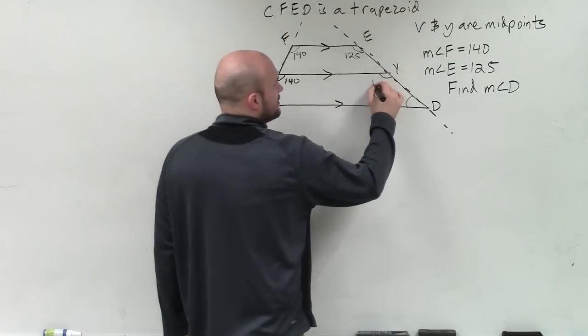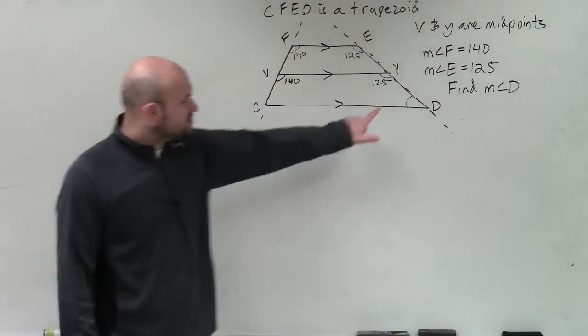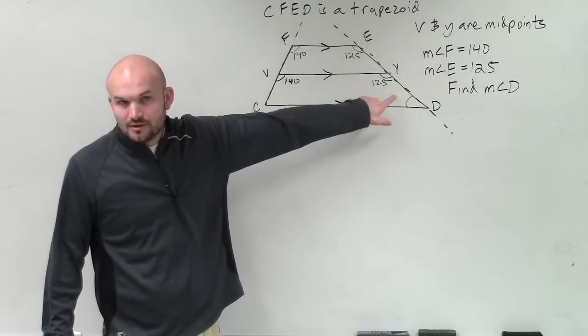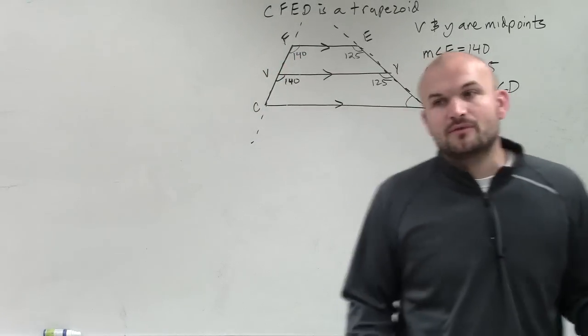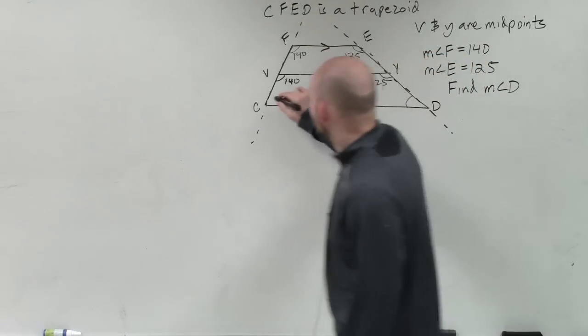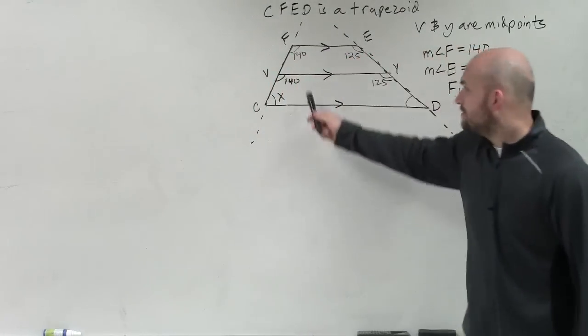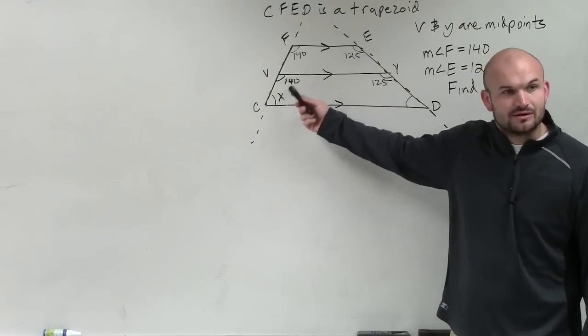Then I can also say that over here, that's 125, because those are corresponding as well. Now, remember, we're trying to figure out what this angle is. So the next thing I could look at, and there's a couple different ways to do this, is if this is 140, then I know that this angle, these two are what we call what Zach said, consecutive interior.